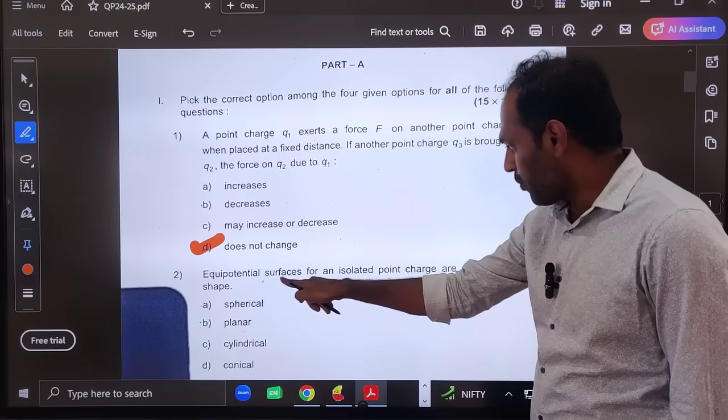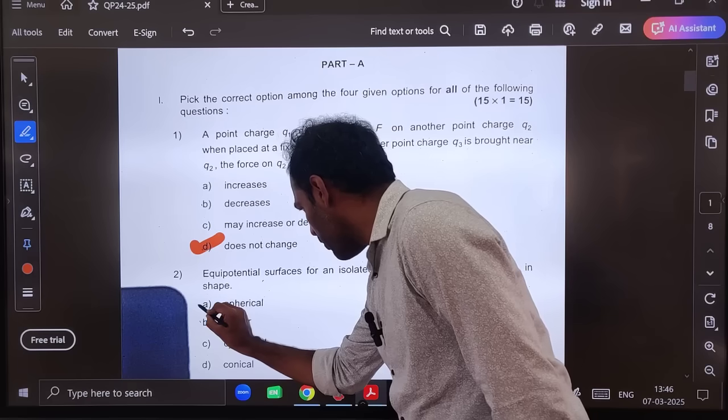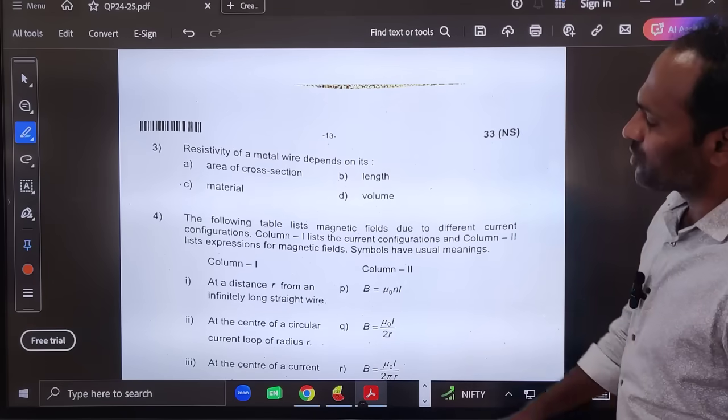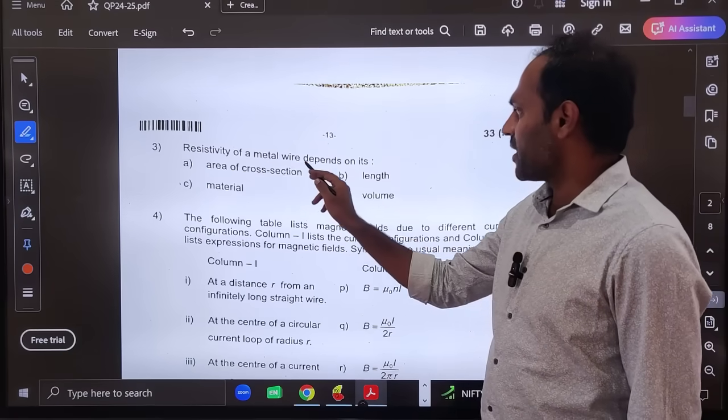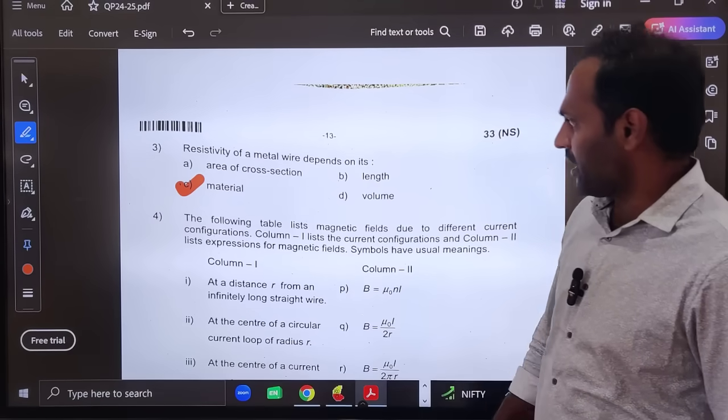Second question: Equipotential surfaces for an isolated point charge. Point charge, isolated point charge, equipotential surface will be spherical. Option A will be correct. Let us go for the third question. Resistivity of material of wire depends on material of the wire.